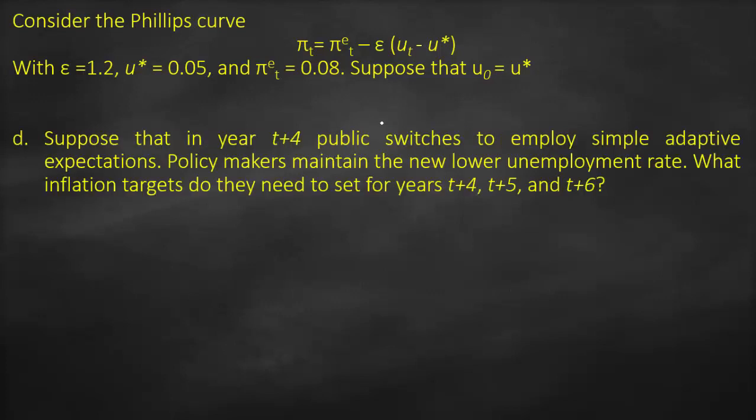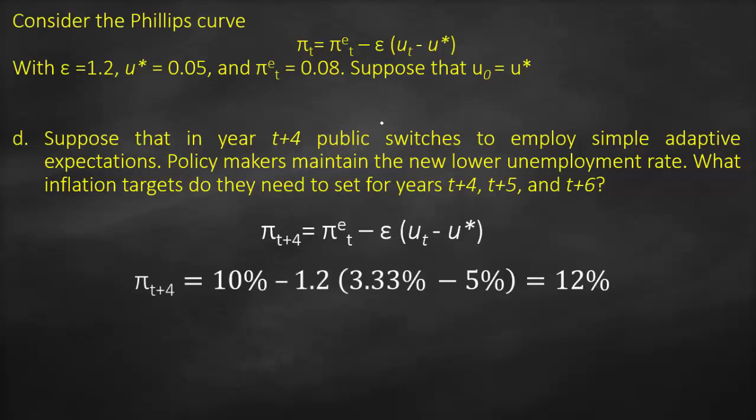The next part: in year T+4, the public switches to simple adaptive expectations, meaning people start to adapt based on actual information. Policy makers want to maintain the new lower unemployment rate of 3.33%. Using the Phillips curve formula, inflation at T+4 equals expected inflation minus epsilon multiplied by (unemployment minus natural rate of unemployment), where expected inflation is the previous period's actual inflation of 10%.